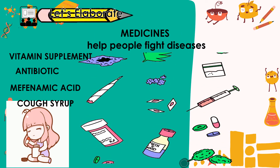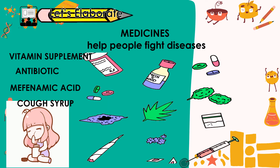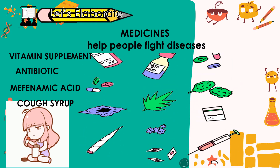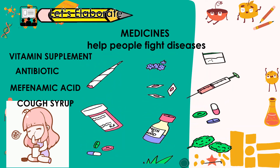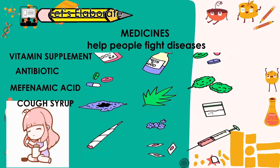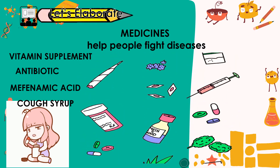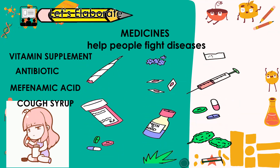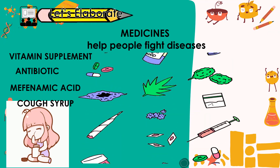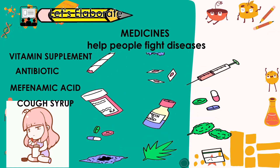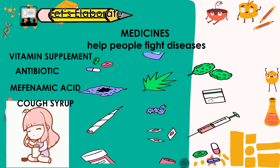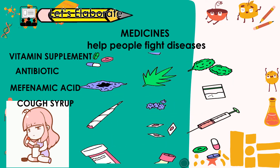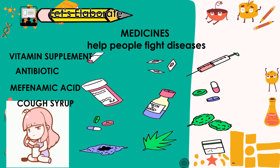Medicines are one of the useful materials that can be found at home, school, and in the community. These medicines help people fight diseases and illness. Examples are vitamin supplements, antibiotics, mefenamic acid, and cough syrup.